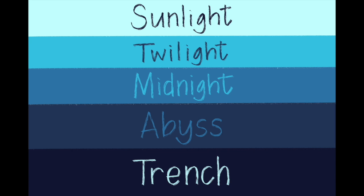From the top down, the zones are sunlight, twilight, midnight, abyss, and trench. What do you notice about the color of the water as the zones get deeper? They get darker. Which layer do you think is the warmest? If you guessed the sunlight layer, you're right. As you can guess, the deeper the zone, the colder the waters, and the shallower the zone, the warmer the waters.